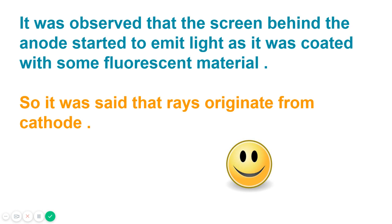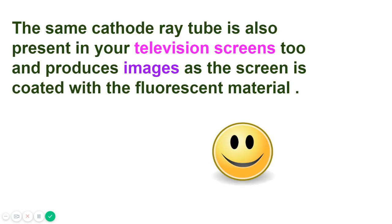It was observed that the screen behind the anode started to emit light as it was coated with some fluorescent material. So it was said that rays originate from cathode. The same cathode ray tube is also present in your television screens and produces images as the screen is coated with fluorescent material.